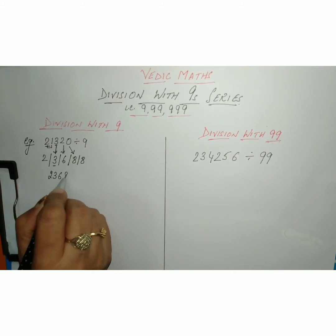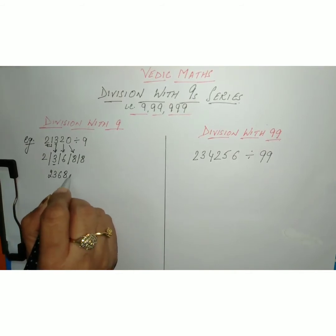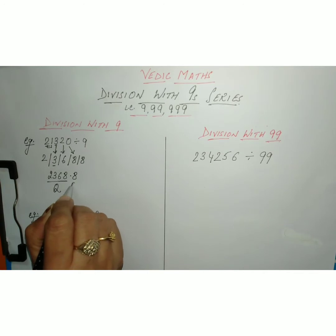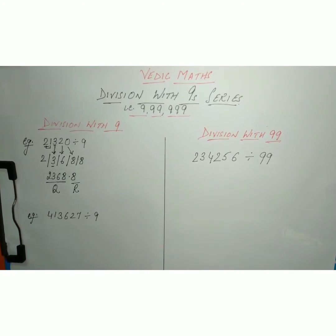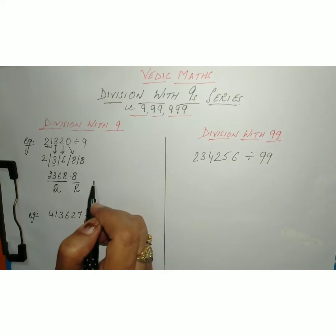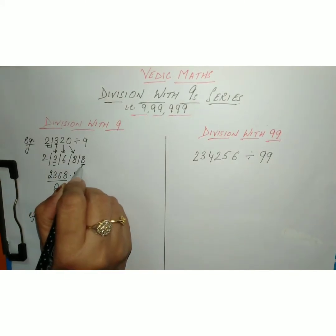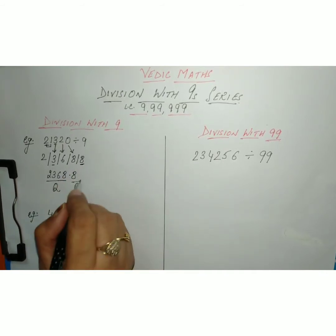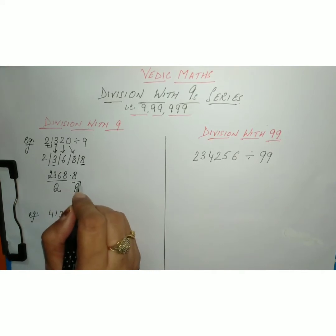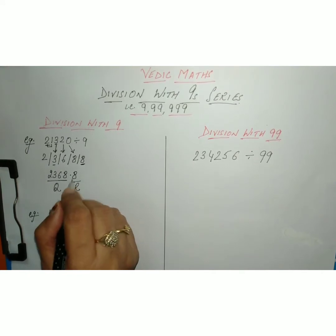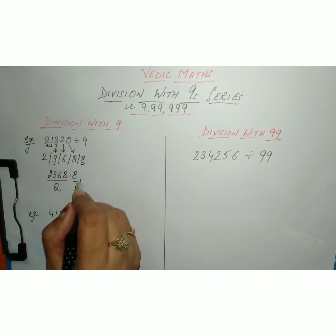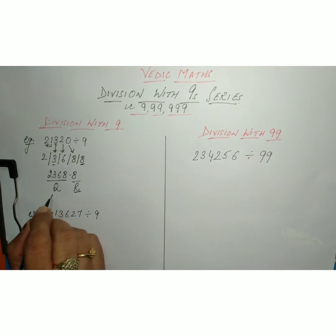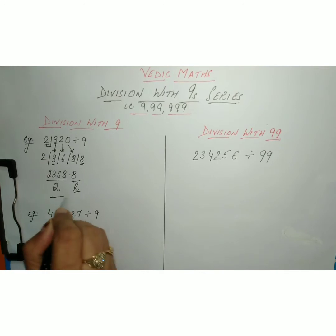So our answer is written as 2368, with the last value 8 being the remainder. The quotient is 2368 and the remainder is 8. Remember: the last number after adding should always be less than 9, since the remainder on division must always be less than the divisor. So this is our answer — as simple as that.